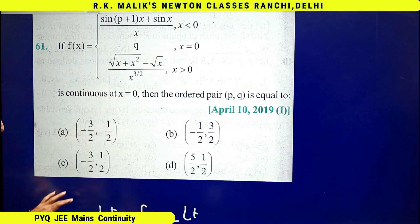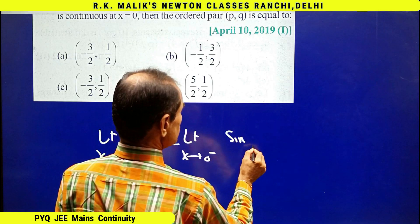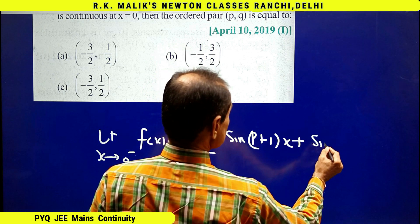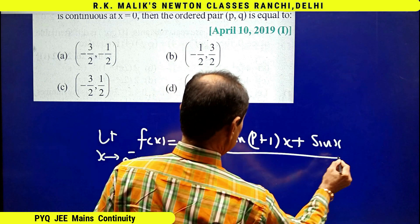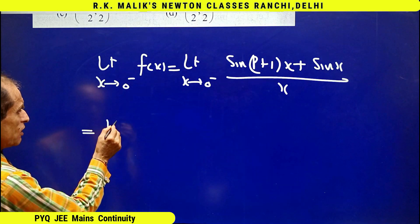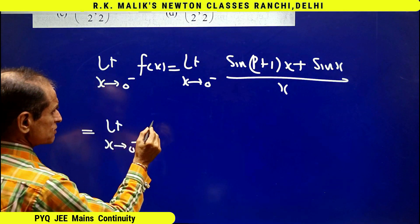Hence I will write sin(p+1)x + sin(x) upon x. This is equal to limit x tends to 0 minus.